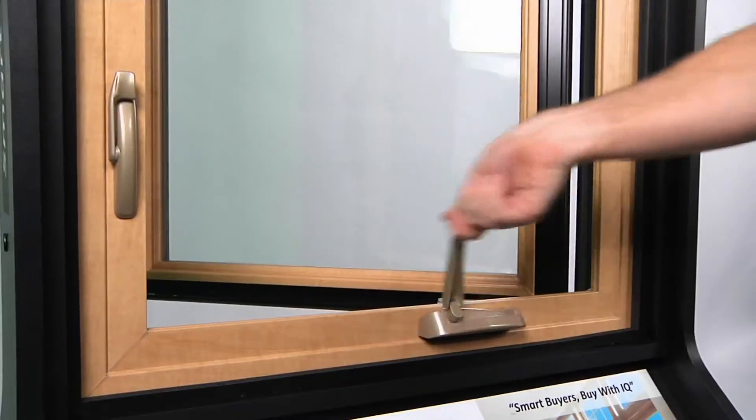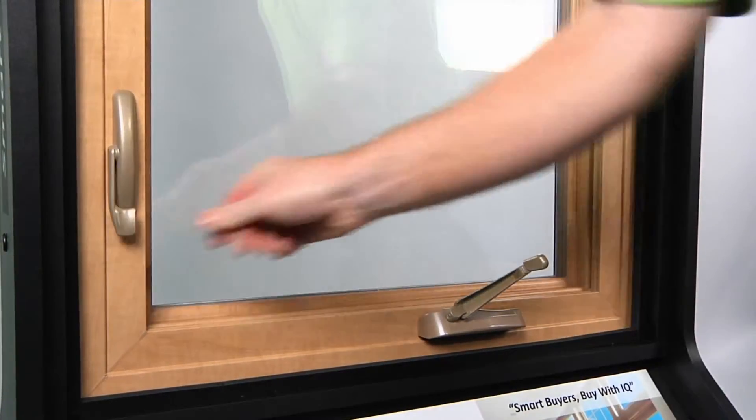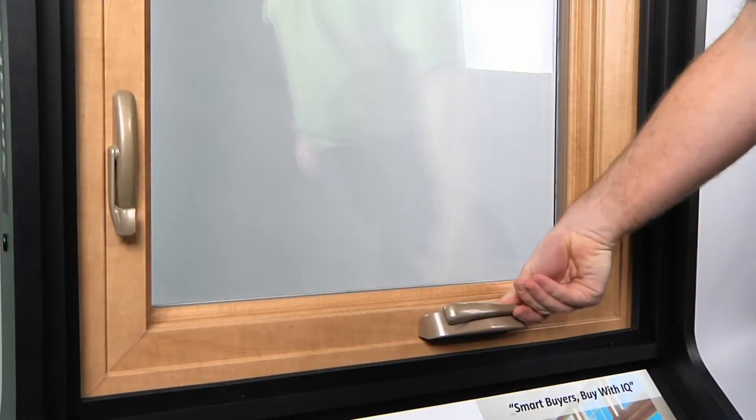IQ casement handles fold down to maintain a clean, low-profile look while providing space for your blinds to operate all the way down the window.